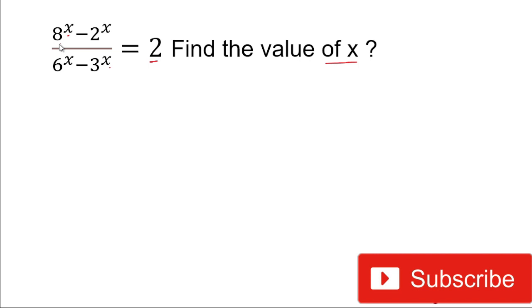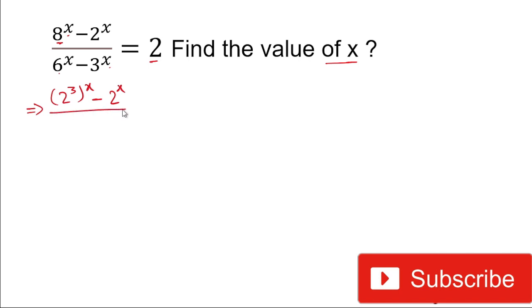To solve this, we have 8 to the power x and 2 to the power x in the numerator. We can write 8 as 2 to the power 3, so 8 to the power x becomes (2³) to the power x. In the denominator, 6 can be written as 2 multiplied by 3, so we have (2×3) to the power x minus 3 to the power x equals 2.